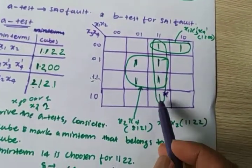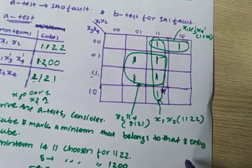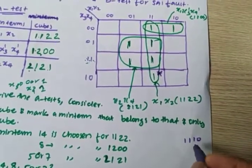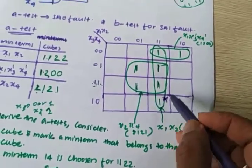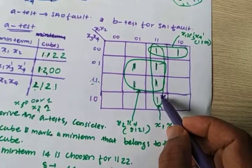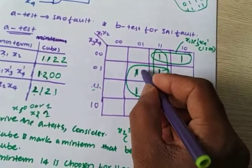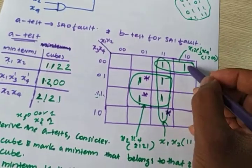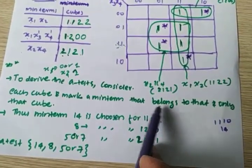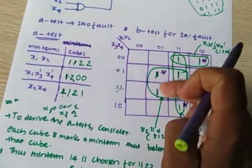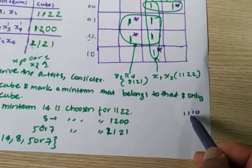The starred minterm for cube 1 1 2 2 is 1 1 1 0, which equals minterm 14. Mark it with a star. Another star mark in that cube is identified. For cube 1 2 0 0, the star-marked minterm is 1 0 0 0, which equals minterm 8. We have 4 star-marked minterms in total across the cubes.